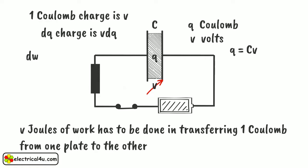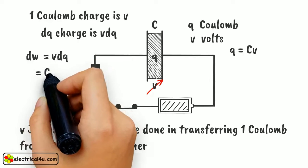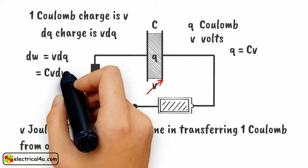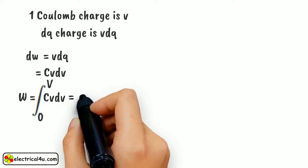Then we can write dW equals to VdQ equals to C into VdV. The total work done in raising the potential of the capacitor from zero to the supply voltage of V volt can be expressed as W equals to integral of CVdV from zero to V. And it is 1 by 2 into CV square.